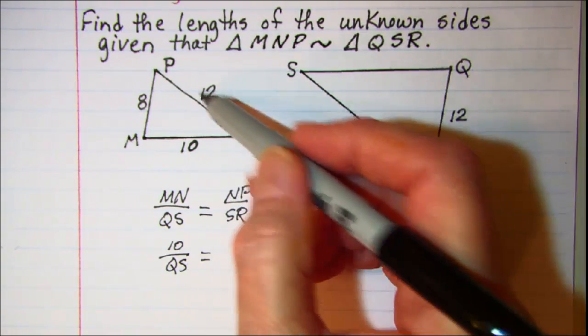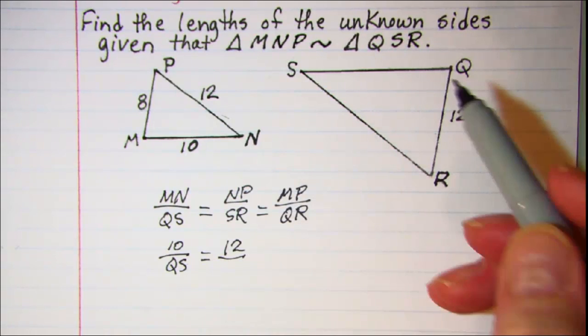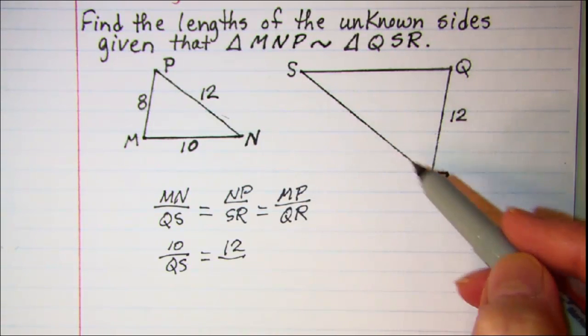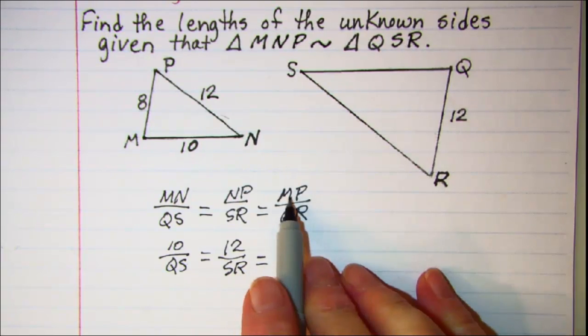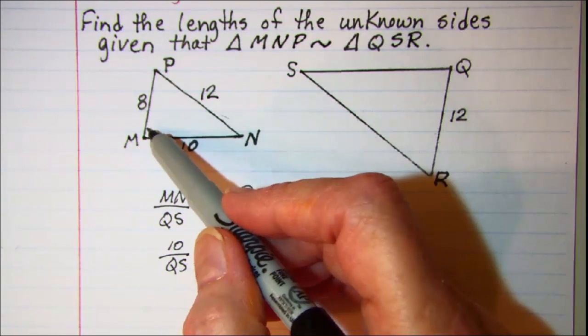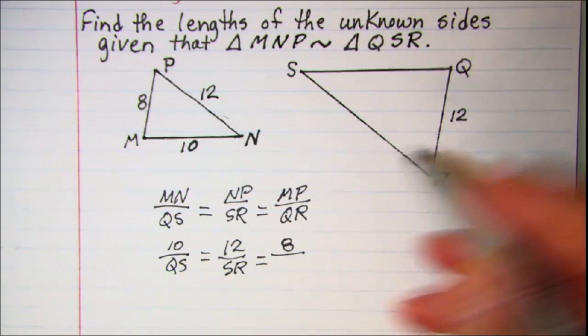NP is 12, SR we don't know so we'll leave that blank. And MP is 8, QR is 12.